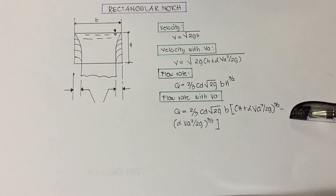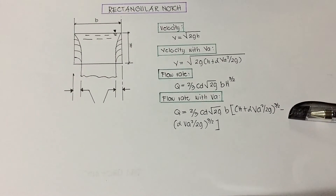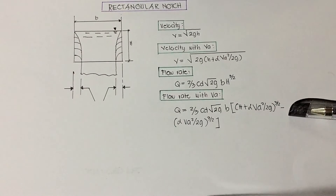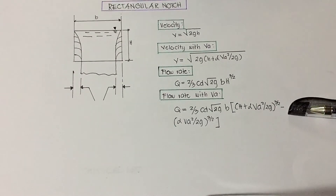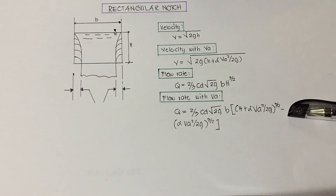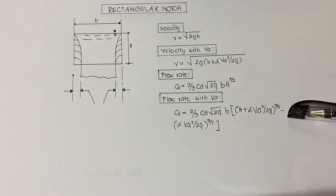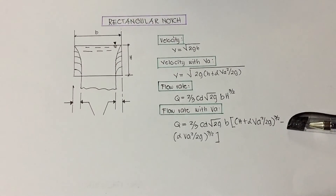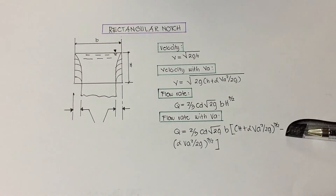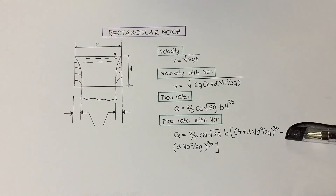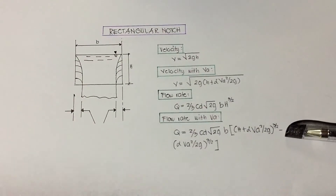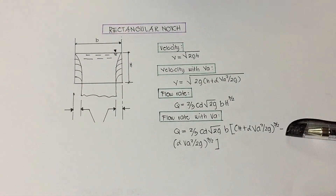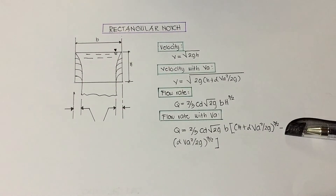The formula for flow rate with velocity approach is equal to two-thirds times the coefficient of discharge times the square root of 2g times base times the quantity of h plus the Coriolis coefficient times va squared over 2g to the power of three-halves, minus the Coriolis coefficient times va squared over 2g to the power of three-halves.